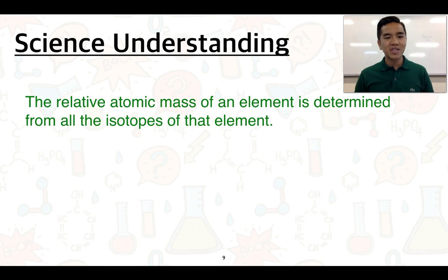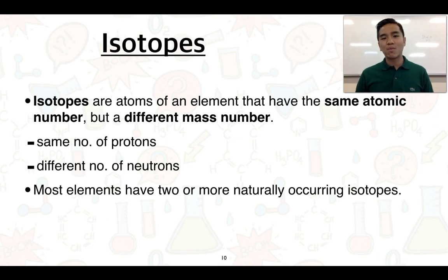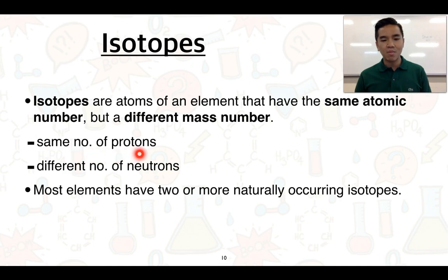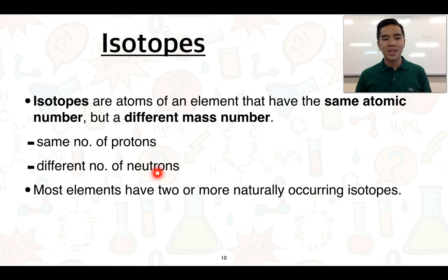Moving to the second science understanding for this lesson, we want to learn about what the relative atomic mass is and look at how this links into isotopes. Let's do a quick recap: isotopes are atoms of an element that have the same atomic number but a different mass number — in other words, they contain the same number of protons but different numbers of neutrons. This ensures it is the same element, while the differing neutron count makes them isotopes of one another.